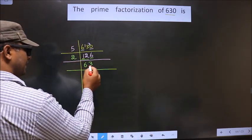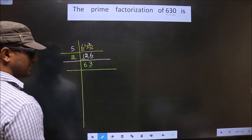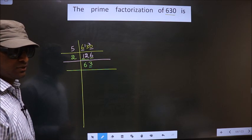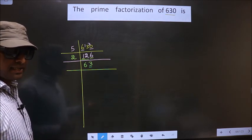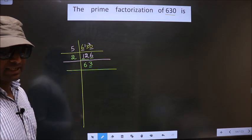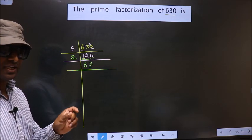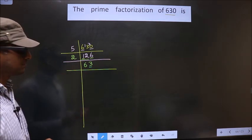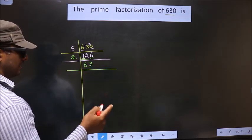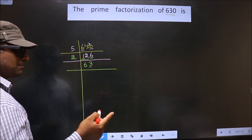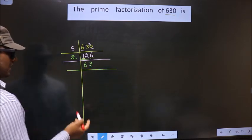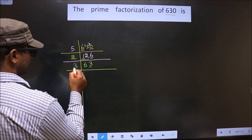Now, in this number, last digit is 3, which is not even. So this is not divisible by 2. Next prime number is 3. To check divisibility by 3, we should add the digits. That is 6 plus 3, 9. Is 9 divisible by 3? Yes. So this number also divisible by 3. So you take 3 here.